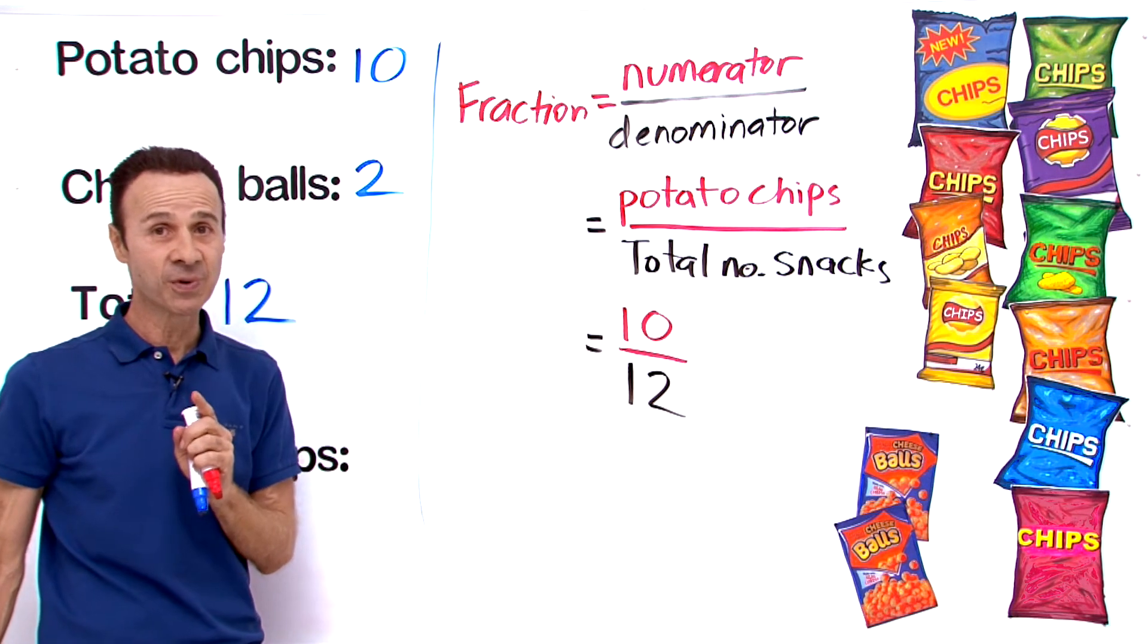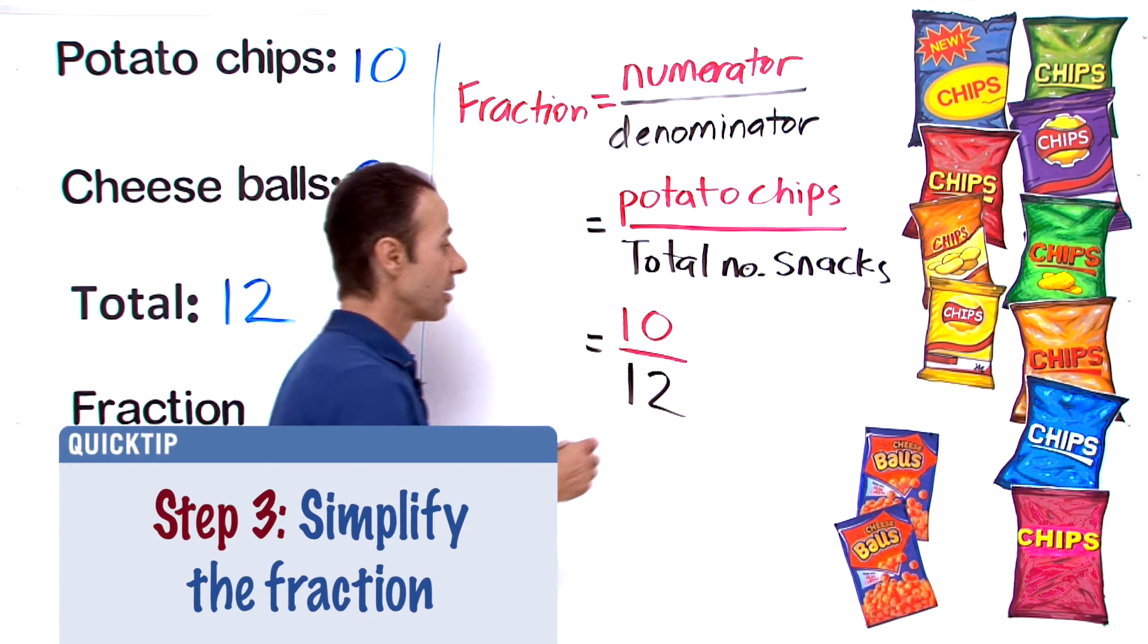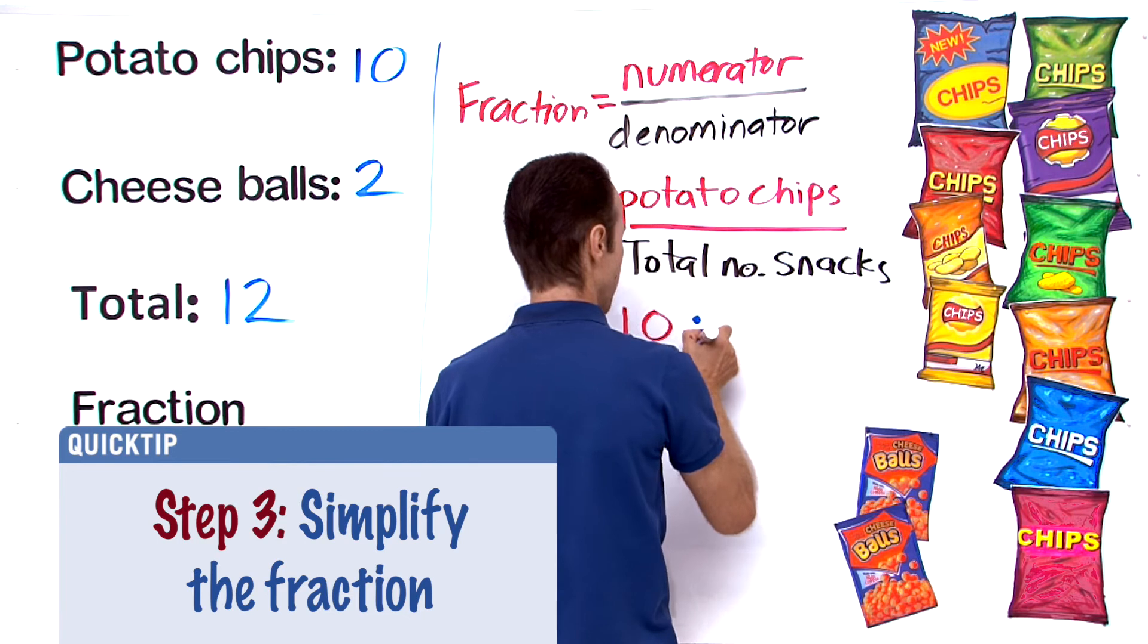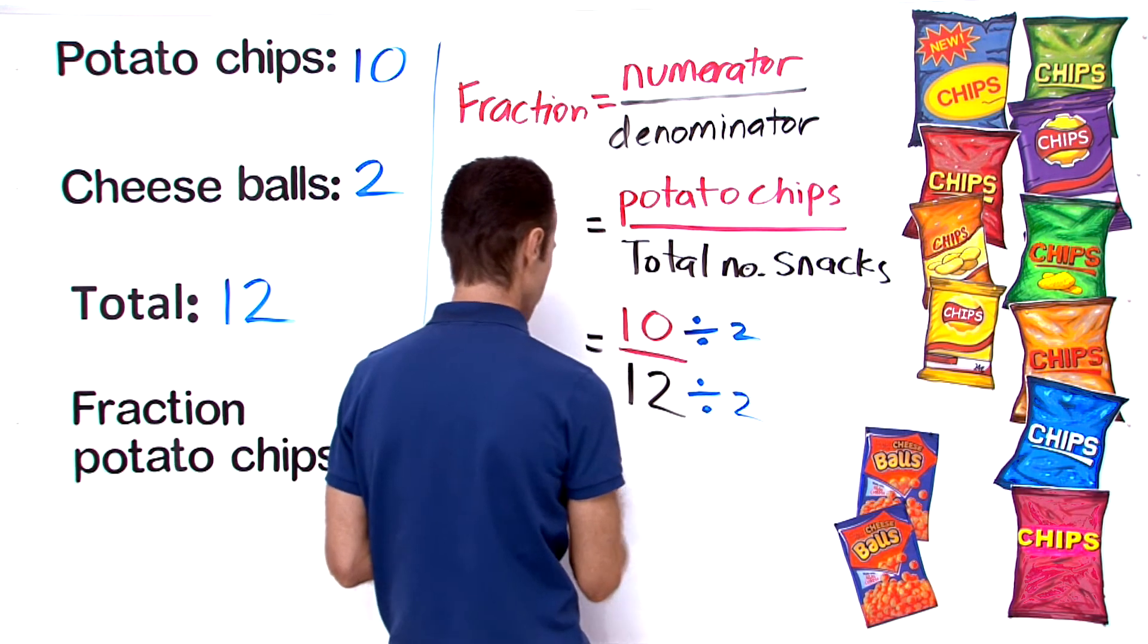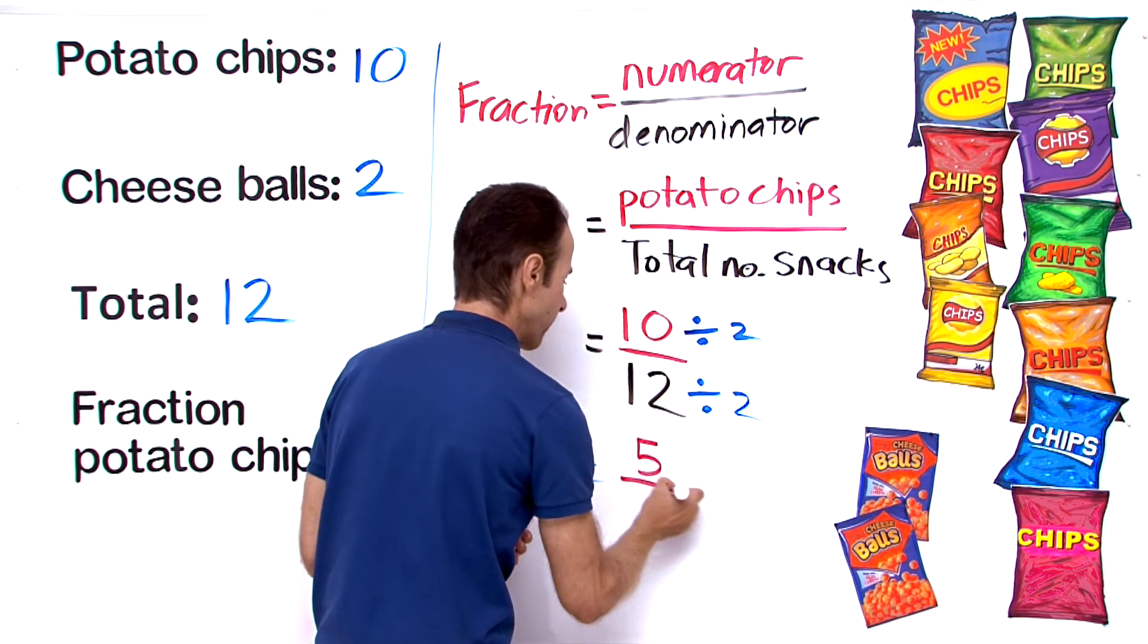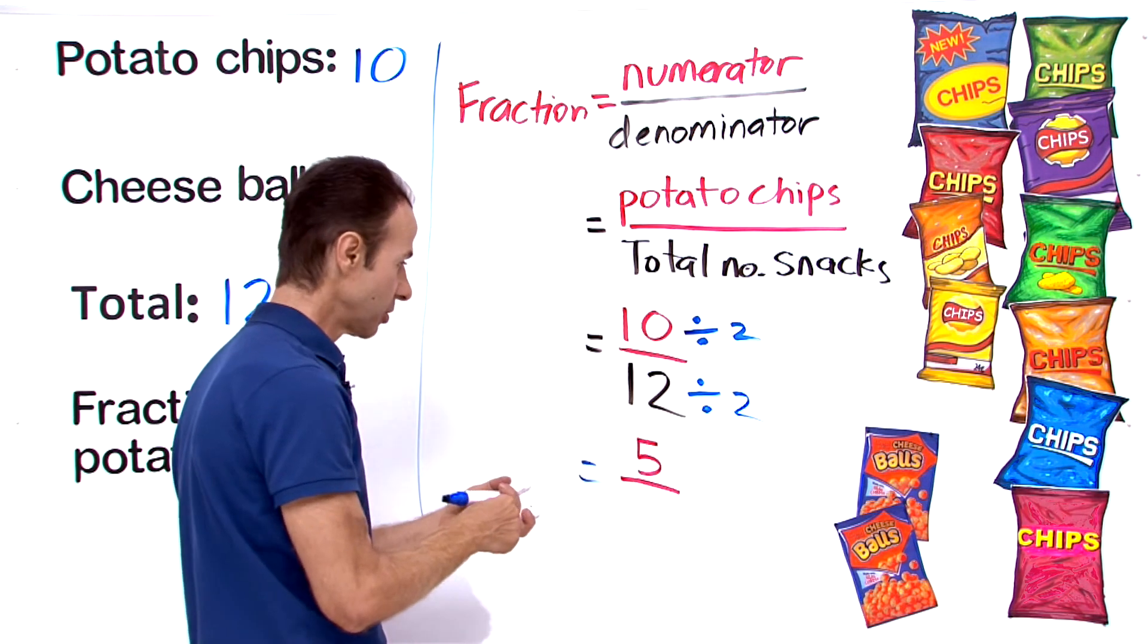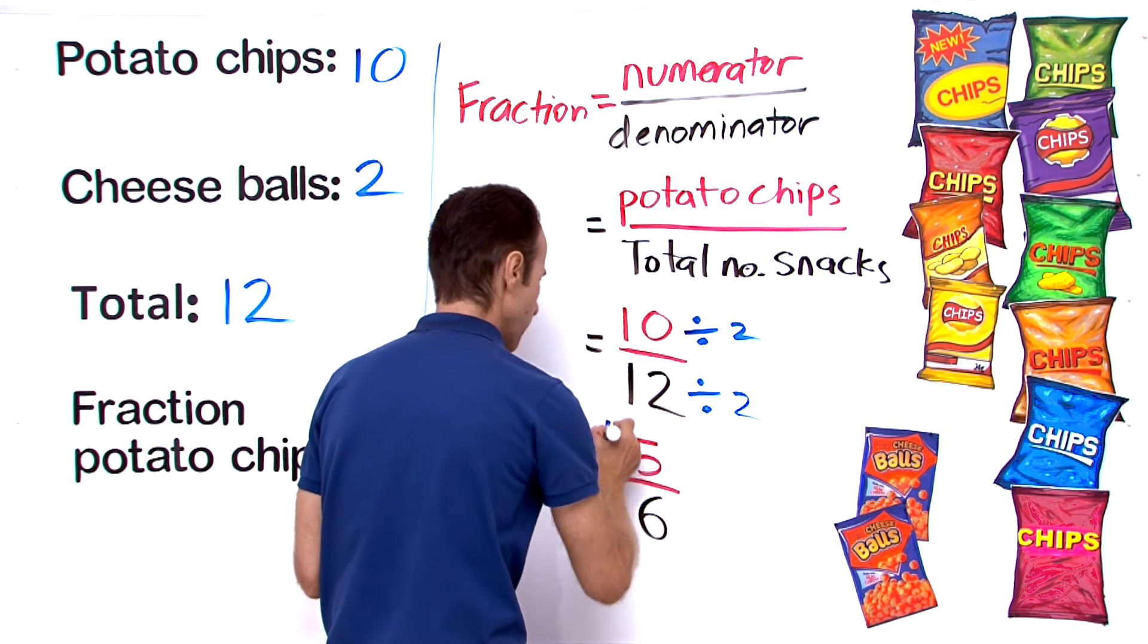Can we simplify this further? Yes we can. We got 10 over 12, we can divide top and bottom by what? We can divide it by 2. Divide by 2, divide by 2. So what does that equal? 10 divided by 2 is 5, the numerator is 5, and 12 divided by 2 is 6. So the answer is 5 sixths.